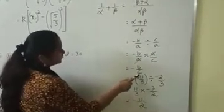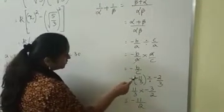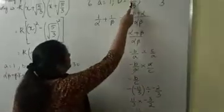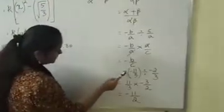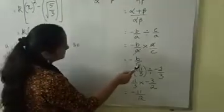Now just use the values of b and c. What's the value of b? Minus 11 by 3. So use that here, the value of b is minus 11 by 3.